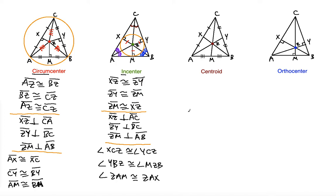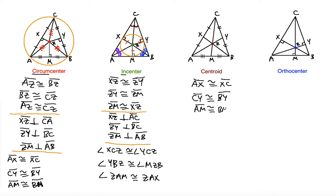The next one is a centroid. The centroid is usually easier to recognize because, just like the circumcenter, it will have three pairs of equal sub-segments. AX is congruent to XC, CY is congruent to BY, and AM is congruent to BM.